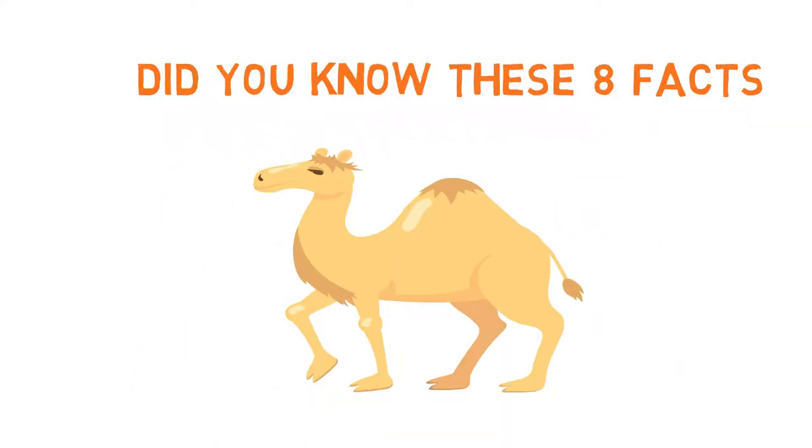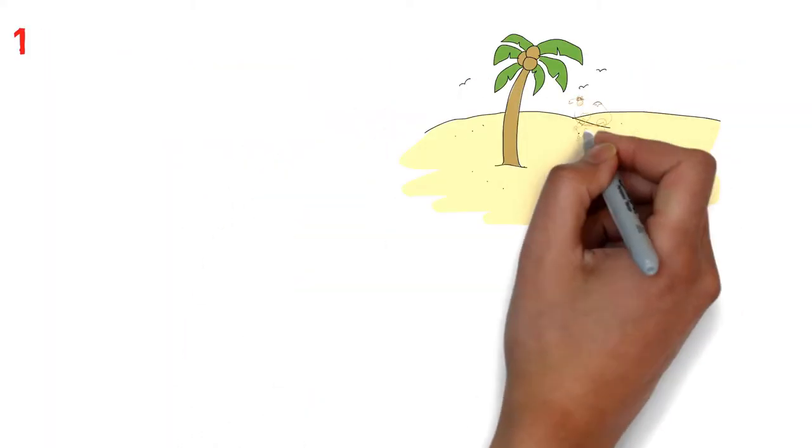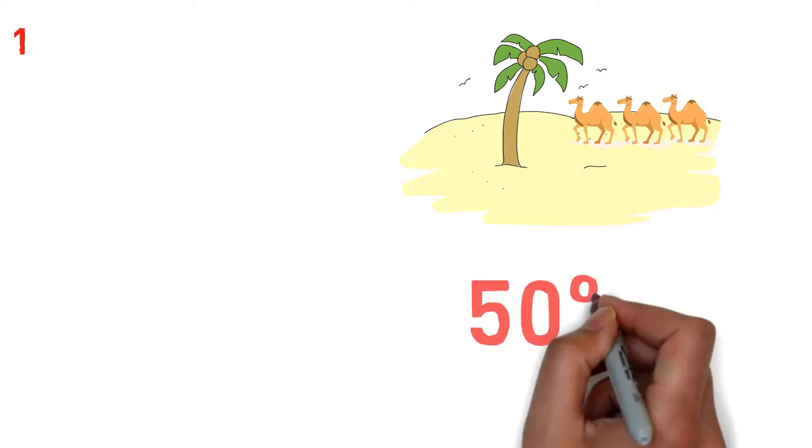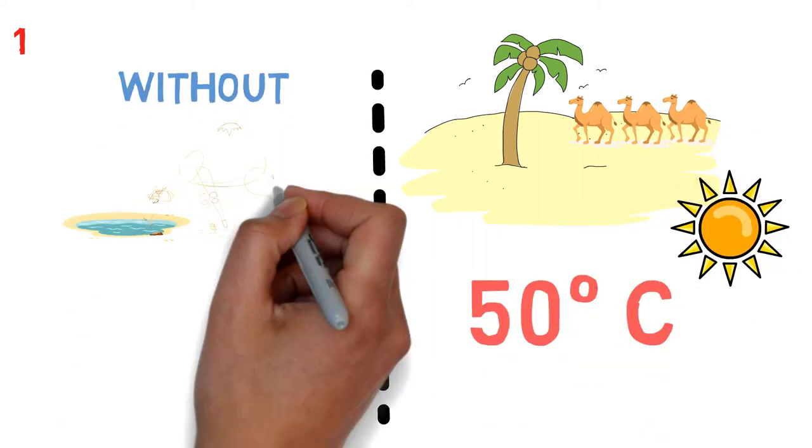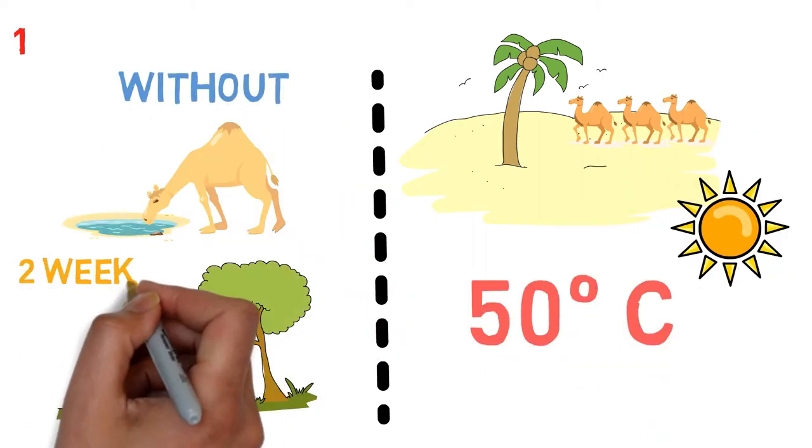Did you know these 8 facts about camels? 1. Only a camel can walk in the desert at 50 degrees Celsius without drinking a drop of water or taking food for 2 weeks.